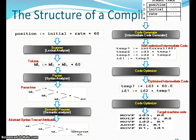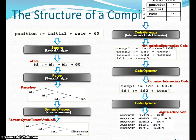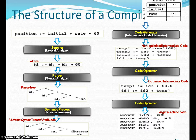Next is the code generator, which generates the machine code — that is the target machine code in terms of mnemonics and assembly level code. After that, the processor can easily convert the code into machine code. You can also see the symbol table here: the format of the symbol table shows all the identifiers, which are the symbols available in the symbol table. This is how all the phases of the compiler work.